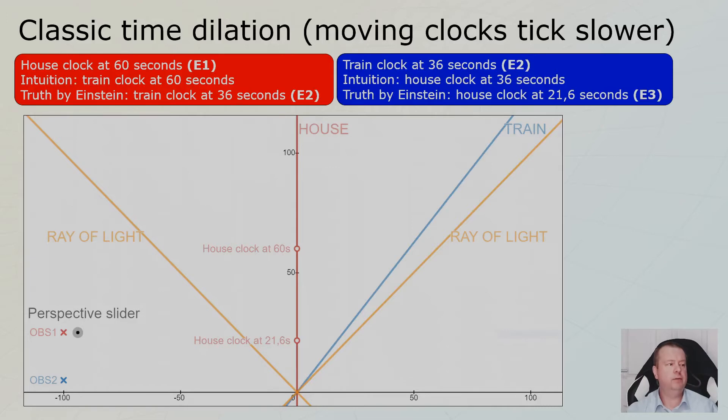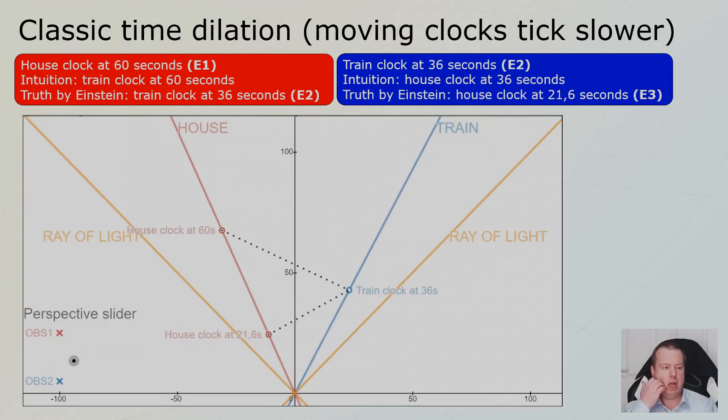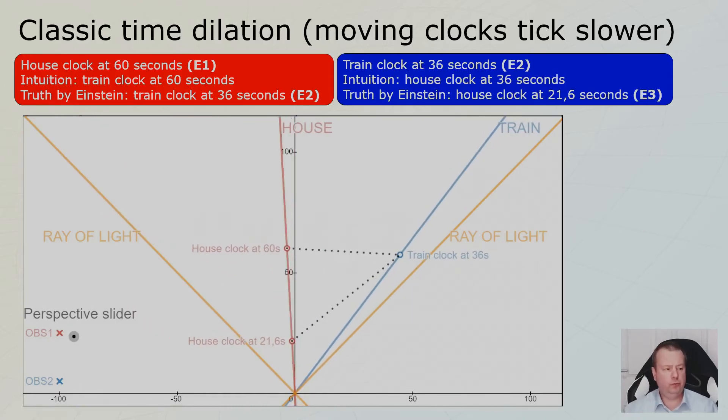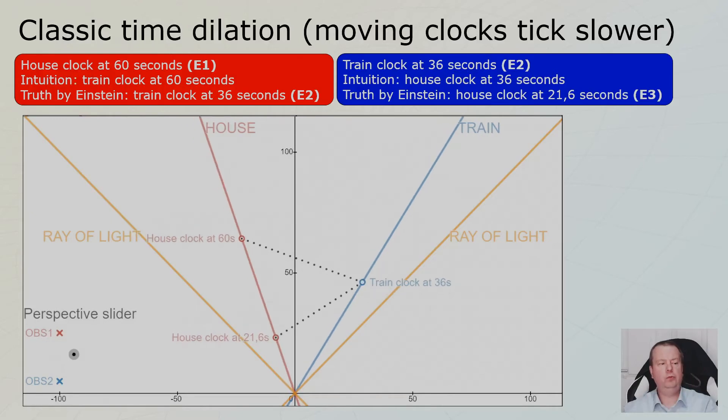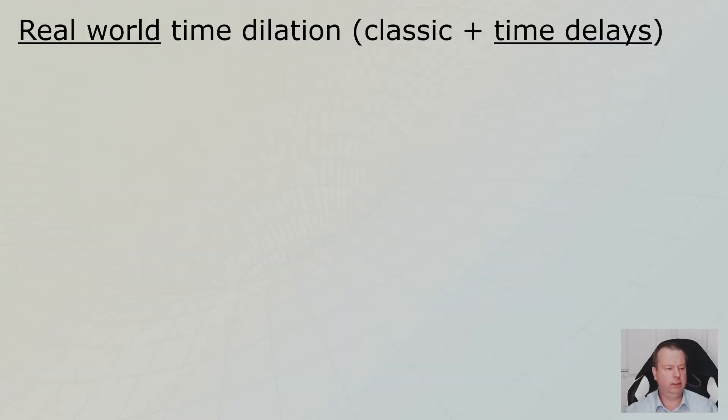What did I do here? I repeated the conversation about classic time dilation because observer number two says when my clock is at 36 in the train, your clock is at 21.6. So they are arguing back and forth. Your clock runs slower. No, your clock runs slower. So how does this look in the space time diagram? Well, this is what's going on. From the train's perspective at 36, the house is at 21.6. From the house's perspective at 60, the train is at 36. So here you can see how powerful it is to use the space time diagram and switching perspectives back and forth.